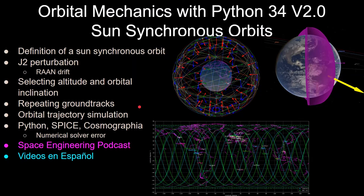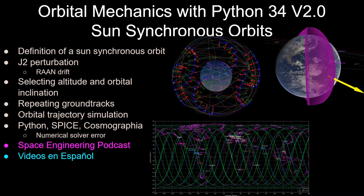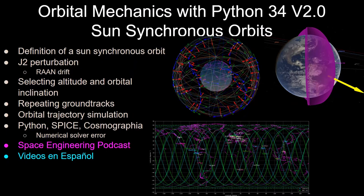how to write the spice kernel that I use for the cosmographia simulation that I have here, and then going a bit over the numerical solver error that goes into solving these equations of motion. And if you haven't seen it already, in this channel, I have the Space Engineering Podcast, which is also available on Spotify, Google Podcasts, and Simplecasts. And I'm also making videos in Spanish, all of which I'll have links in the description too.